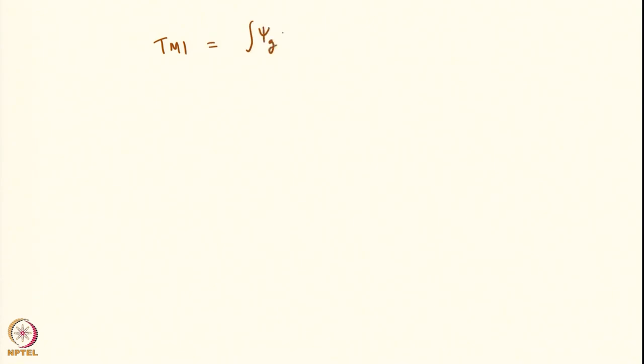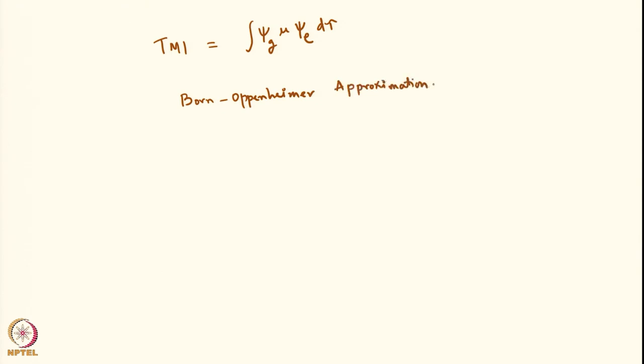Now let us think about the transition moment integral (TMI). The TMI will be equal to the integral of psi-ground times mu times psi-excited d-tau. However, there is a complication because of the Born-Oppenheimer approximation, which states that the electronic wave function parametrically depends on the nuclear coordinates. So psi-electronic depends on the electron coordinates and the nuclear coordinates alpha.